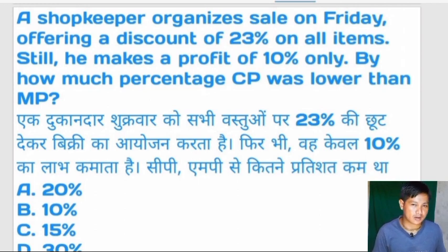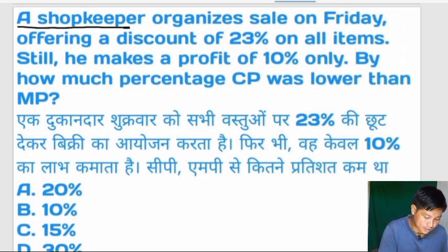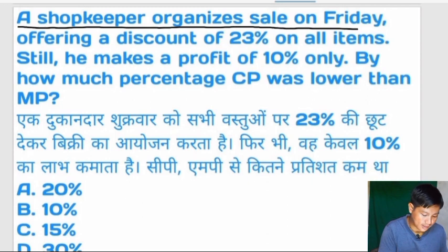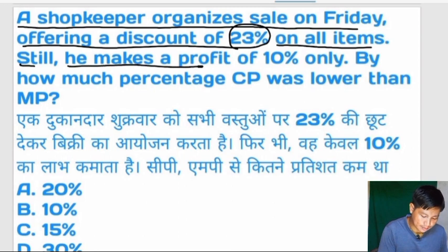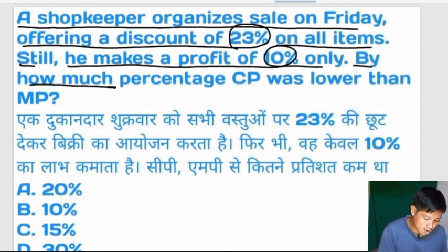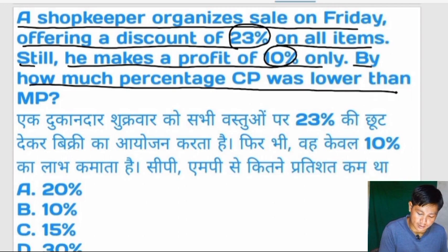A shopkeeper organizes a sale on Friday, offering a discount of 23% on all items. Still, he makes a profit of 10% only. By how much percent was the cost price lower than the marked price?